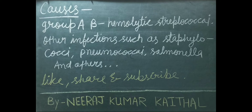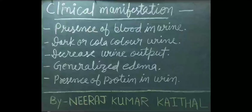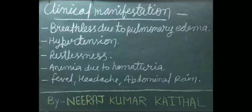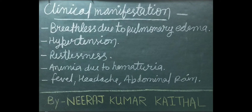Other infections such as staphylococci, pneumococci, salmonella, and others. Clinical manifestations include presence of blood in urine, dark or cola-colored urine, decreased urine output, generalized edema, presence of protein in urine, breathlessness due to pulmonary edema, hypertension, restlessness, and anemia.